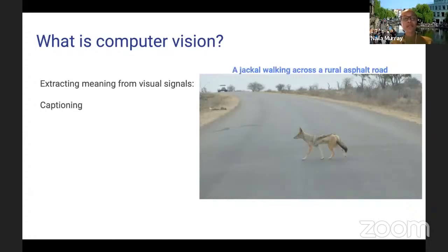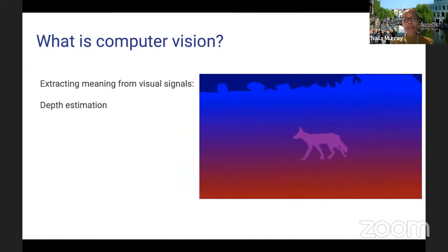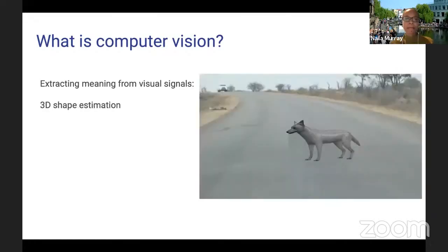You might also want to caption images — given an image, produce a short textual description summarizing what's depicted. You might want to perform semantic segmentation, ascribing a semantic label to every pixel. You might also want to perform depth estimation, assigning a value to every pixel indicating how far that object is from the camera, or perform 3D shape estimation of specific objects.